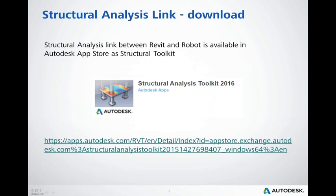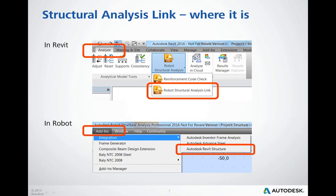The structural analysis link between Revit and Robot is available in the Autodesk App Store under the name Structural Analysis Toolkit - Direct Link Toolkit. After installation, it is available either in Revit or in Robot. In Revit, it can be found in the Analyze tab, Structural Analysis panel, under the Robot Structural Analysis button. In Robot, you can find it in the Add-ins and Integration menu.